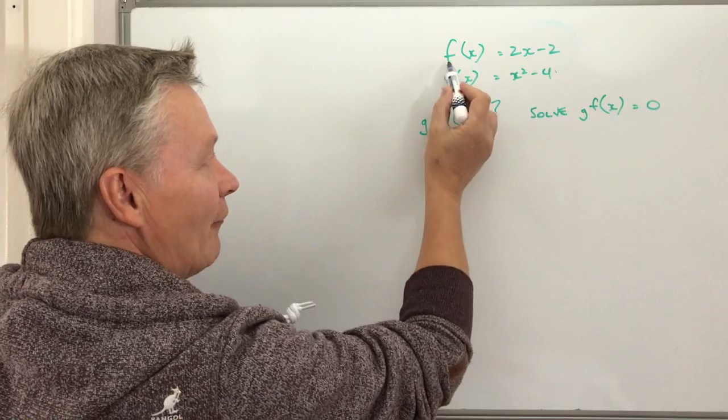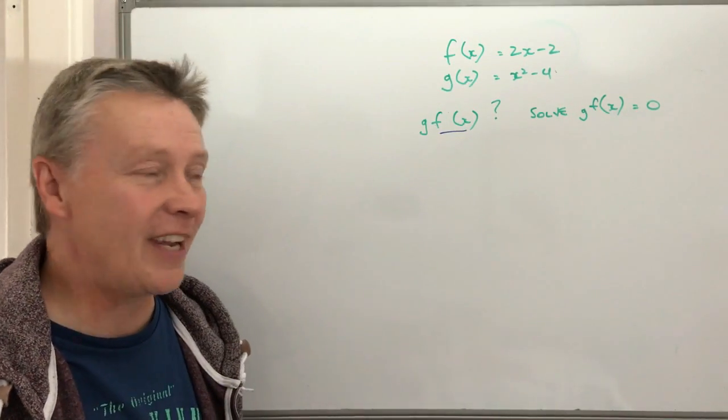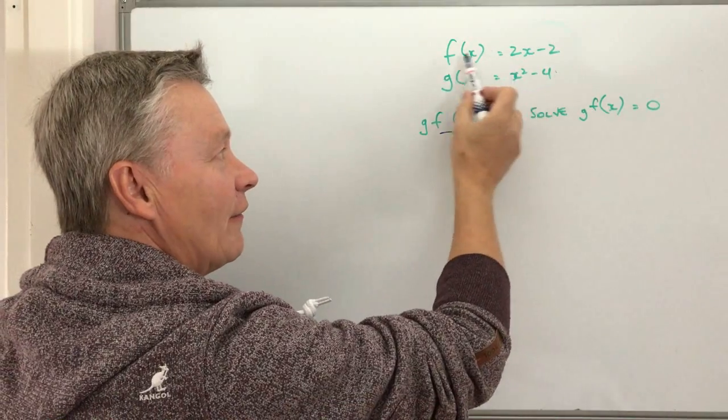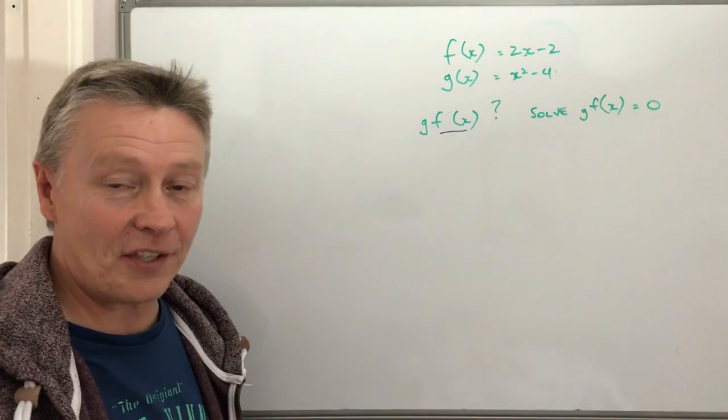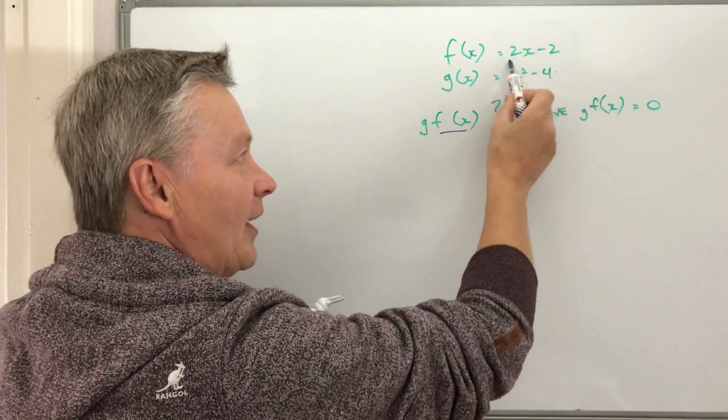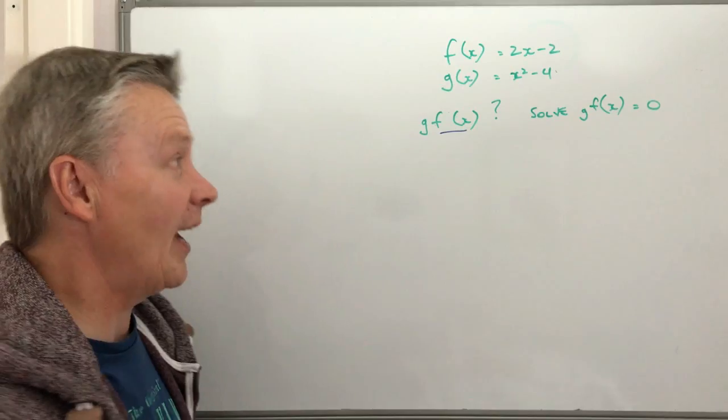So what we're saying is that f of x, and remember in the previous video we've talked about order, the f of x, in other words the function of x, is 2x minus 2, so that's the output.